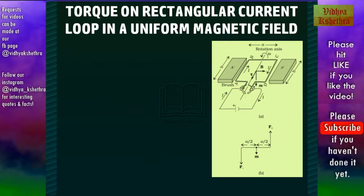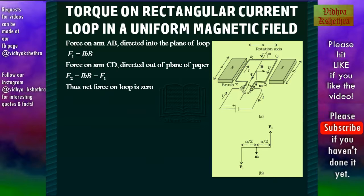For that we consider a current loop ABCD kept in a uniform magnetic field. The current loop has length b and breadth a, and due to the uniform magnetic field, the sides AB and CD experience a force.